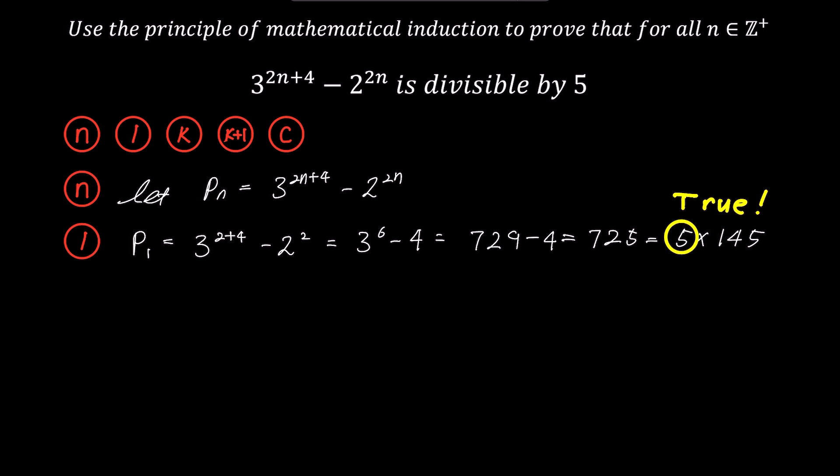Now, we have established that the first domino block falls. We move on to step 3, where we assume that the kth domino block denoted as pk is true. We use the expression for pn with n replaced by k. pk equals 3 to the power of 2k plus 4 minus 2 to the power of 2k can be expressed as 5 times some integer, m.